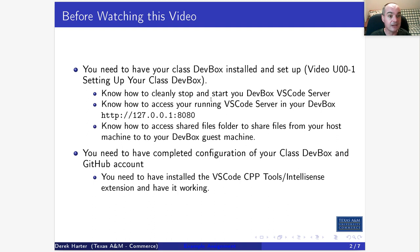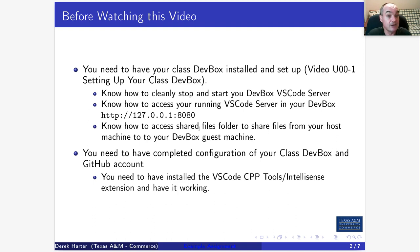You need to know how to cleanly stop and start your dev box from the command line using 'vagrant up' and 'vagrant halt'. You need to know how to get into your VS Code server in your dev box once it's running by going to the forwarded port in a browser from the host machine. And you need to know how to access shared files in order to get files in and out of your dev box.